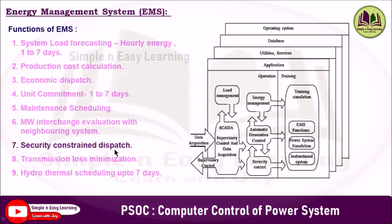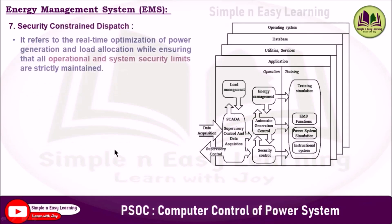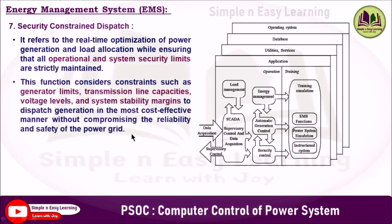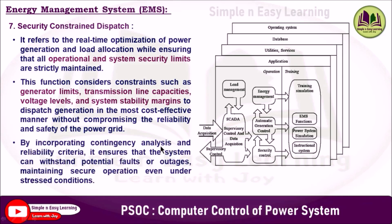The seventh function is security constrained dispatch. It refers to real-time optimization of power generation and load allocation while ensuring that all operational and system security limits are strictly maintained. This function considers constraints such as generator limits, transmission line capacities, voltage levels, and system stability margins to dispatch generation in the most cost-effective manner without compromising the reliability and safety of the power grid. By incorporating contingency analysis and reliability criteria, it ensures that the system can withstand potential faults or outages, maintaining secure operation even under stressed conditions.